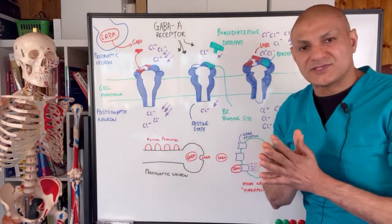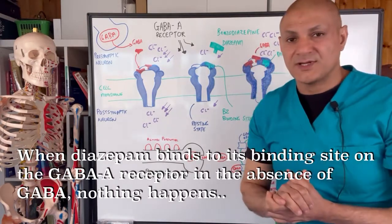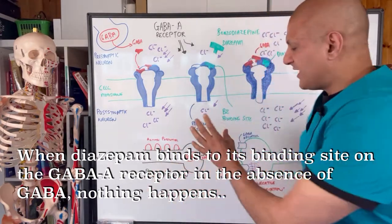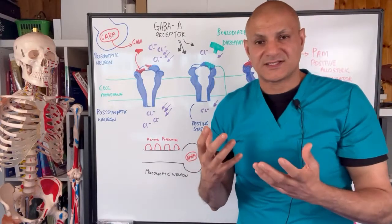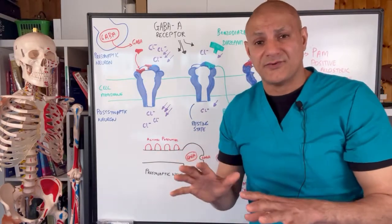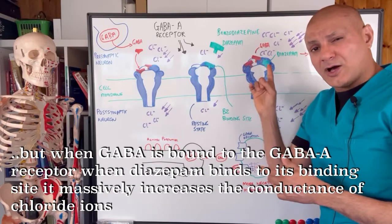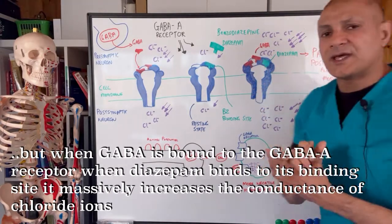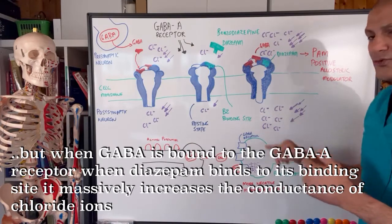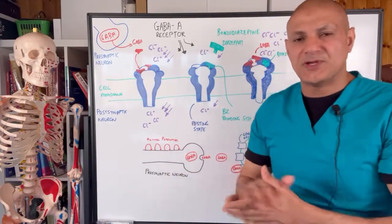On the GABA-A receptor, there is a binding site for the benzodiazepines. When diazepam binds to the GABA-A receptor in the absence of GABA, it does nothing for the conduction of the chloride ions — this is the GABA receptor in its resting state. However, when GABA is already bound to its binding site on the GABA-A receptor and is then joined by diazepam or any other benzodiazepine, it massively increases the conduction of chloride ions, drastically making the inside of the cell more negative and reducing the excitability of that neuron.